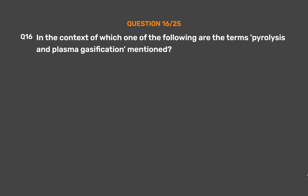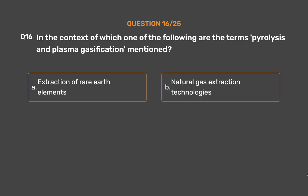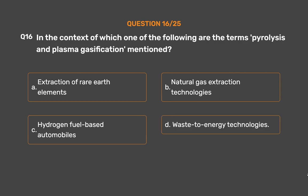Question No. 16: In the context of which one of the following are the terms 'pyrolysis' and 'plasma gasification' mentioned? Option A: Extraction of rare earth elements. Option B: Natural gas extraction technologies. Option C: Hydrogen fuel based automobiles. Option D: Waste-to-energy technologies.